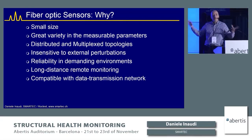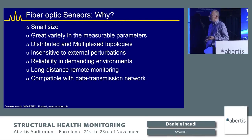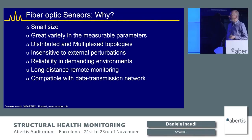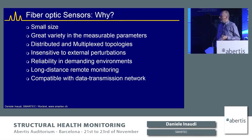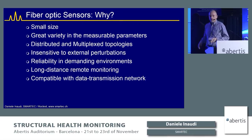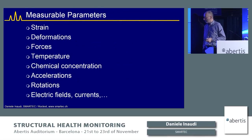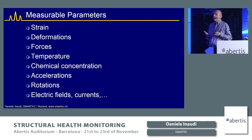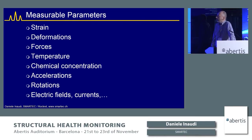Fiber optic sensors can cover large areas with high density of measurement points. They are insensitive to external perturbations such as electromagnetic disturbance and lightning strikes. They can operate reliably in demanding environments with corrosion, high and low temperatures, etc. They can measure over long distances and are compatible with data transmission networks. For almost any parameter measurable with conventional sensors, there is probably one or more fiber optic sensor equivalent.